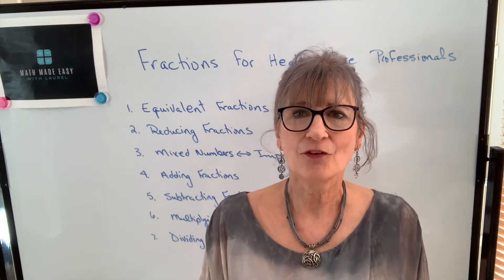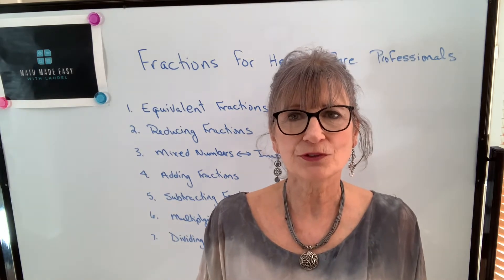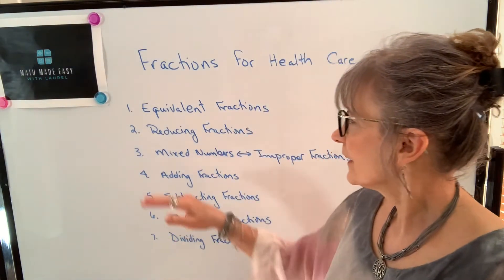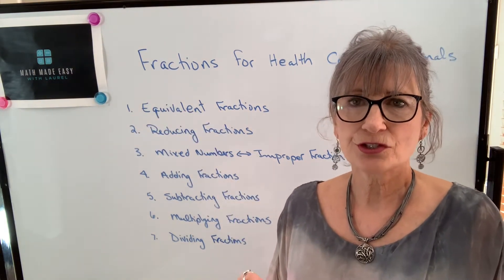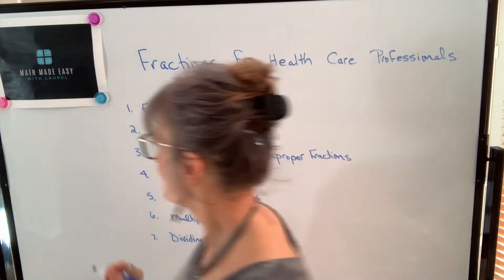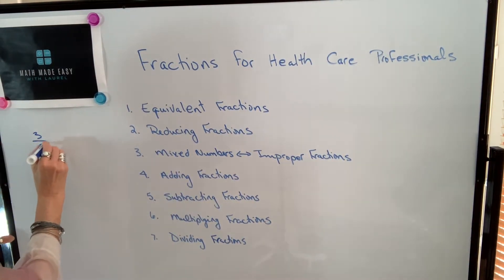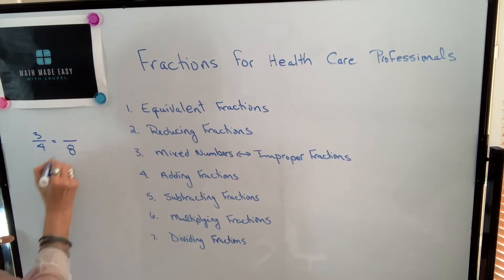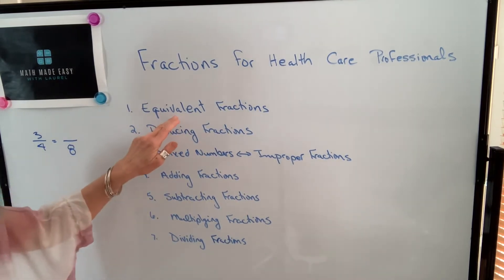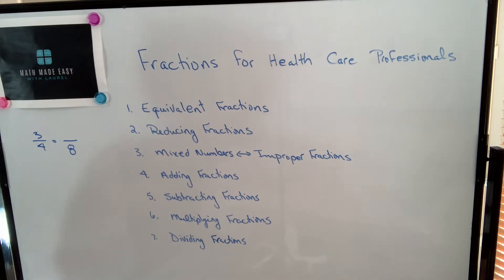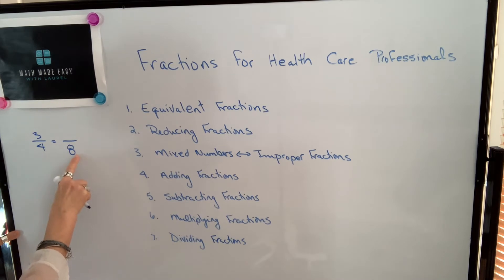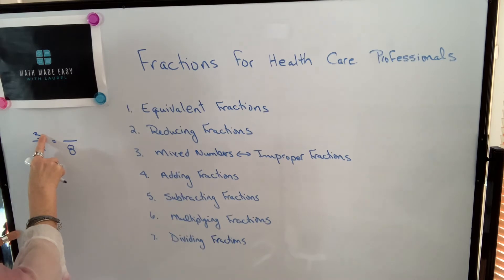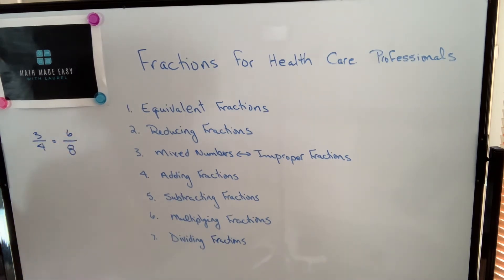Prior to this video, I have produced some videos on fractions. Specifically, I did a video on equivalent fractions. So if you need to change a fraction like 3 quarters to an equivalent fraction with a different denominator such as 8, this video shows you how to do it. As a quick tip, you determine what your denominator needs to be multiplied by to get the new denominator — in this case 2 — so you multiply your numerator by the same value. So this would be equivalent to 6 eighths.